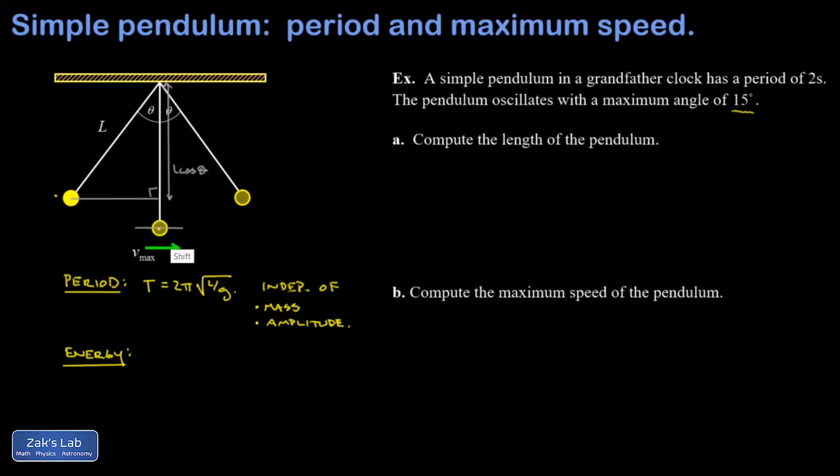I'm going to put the zero of my Y coordinates at the lowest point for the problem, and then I can measure the height where the pendulum was initially at rest. Because the string still has a length of L when it's pointed straight down, that height is just going to be L minus L cosine theta.